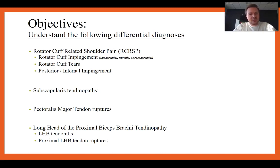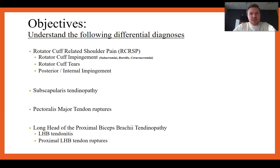Rotator cuff related shoulder pain — this is a big one, a bucket term, RCRSP, that's come along the last couple of years to incorporate a lot of different shoulder pain syndromes: rotator cuff impingement, rotator cuff tears, and posterior internal impingement. We'll also cover subscapularis, the fourth rotator cuff muscle/tendon, pec major tendon ruptures, and long head of the proximal biceps brachii tendinopathy.